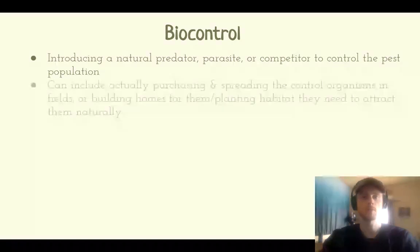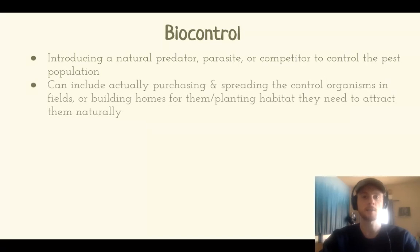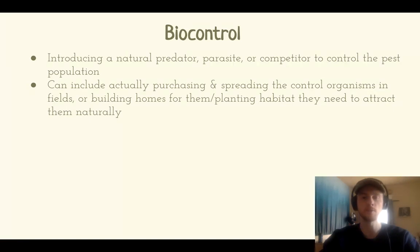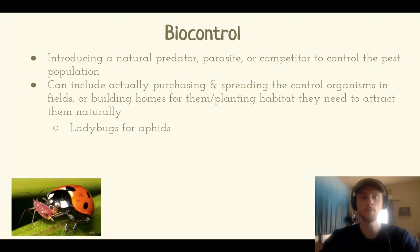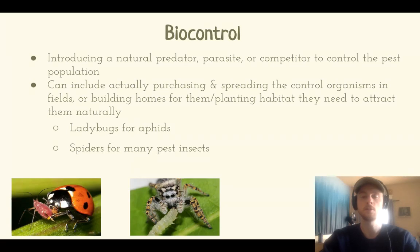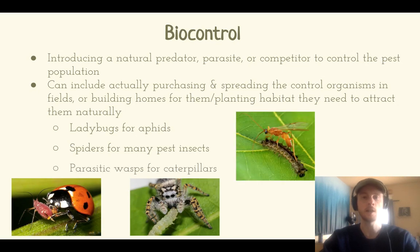You can either buy the pest control agent yourself — for example, you could purchase ladybugs in the mail — or you could plant habitat that will naturally attract predators to your agricultural fields. Ladybugs are especially effective at controlling aphid populations. You can use spiders to control a wide variety of insect pests. Parasitic wasps are especially effective for controlling different species of caterpillars that may attack your crops.